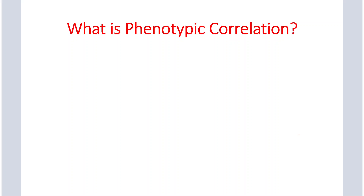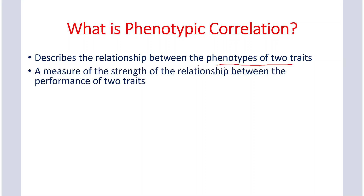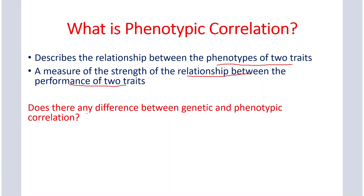Our next topic is phenotypic correlation. Phenotypic correlation describes the relationship between the phenotypes of two traits. It tells us the relationship between phenotypes; it does not tell us about the genetic relationship. We can also define phenotypic correlation as a measure of the strength of the relationship between the performance of two traits — how phenotypically two traits are correlated.